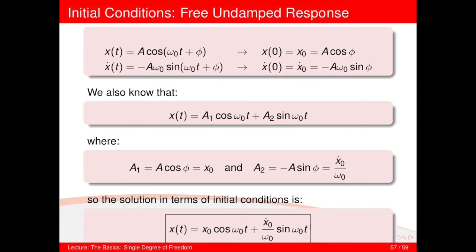If you know your system is undamped and free oscillating and you've been given x-zero and x-dot-zero, you can go straight to the solution on your equation sheet. You don't need to worry about making the derivative yourself.